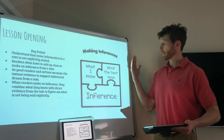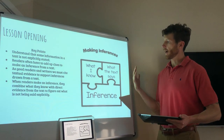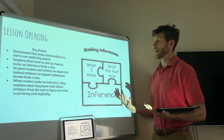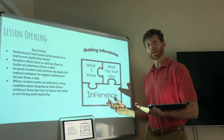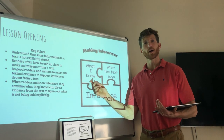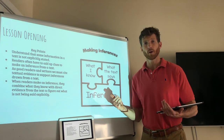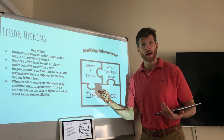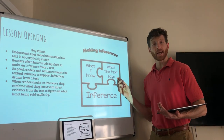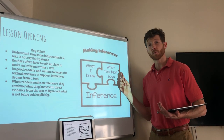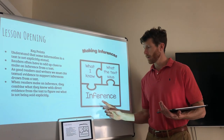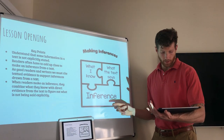This little puzzle piece diagram explains perfectly how to make an inference. In order to make an inference, we take what we already know about life in general — this could be called prior knowledge or background knowledge — and we add it to what the text says, the direct evidence the author is giving us. When we add those two pieces together, what we come up with is an inference.